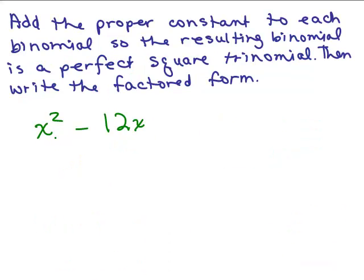So let's try that on another problem. So we have this binomial, X squared minus 12X, which is not a perfect square. And the question is, what can we add to it to make it a perfect square? And then we're going to write it in factored form. So I start out with the X, because that will give you the X squared, the minus, and then half of 12 is 6. So this will be X minus 6.